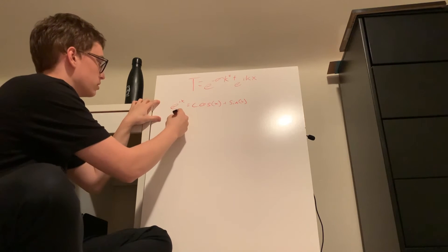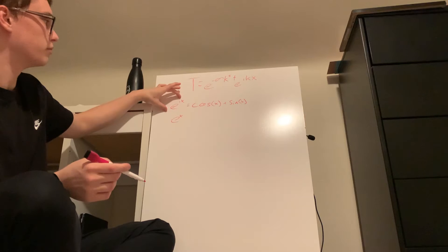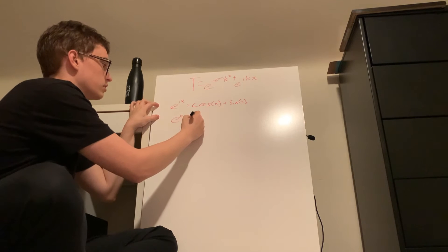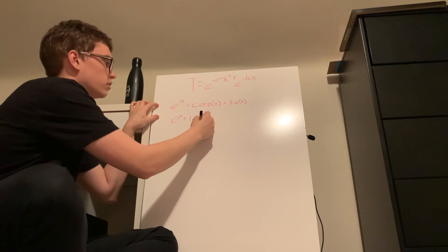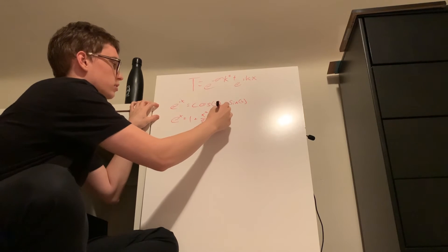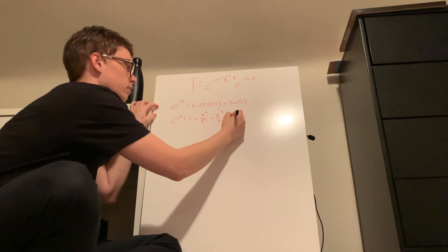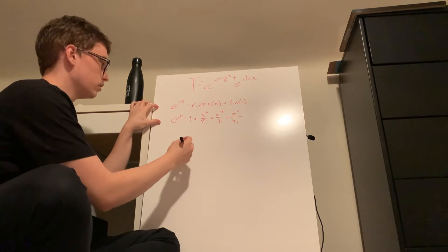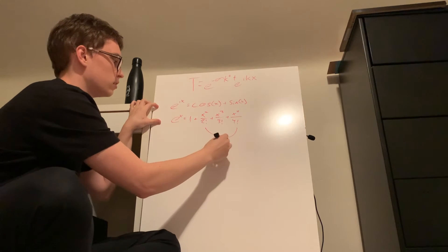It basically proves that the Taylor series of e to the x is equal to these two added. So the Taylor series of e to the x is 1 plus x squared over 2 factorial plus x cubed over 3 factorial and it continues like that. Let's do x4 over 4 factorial.